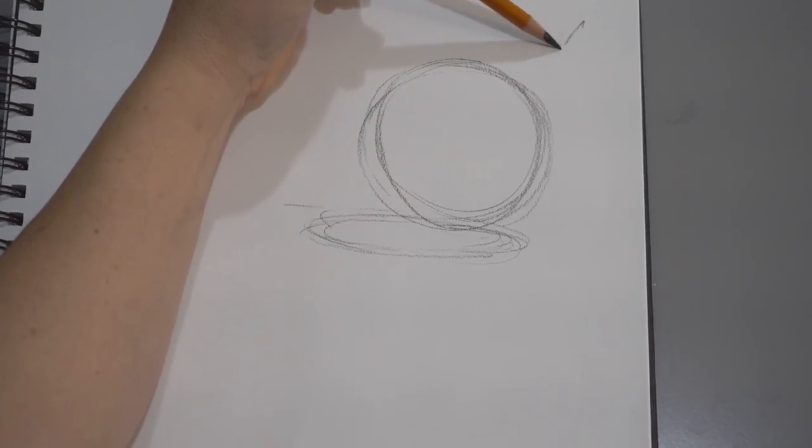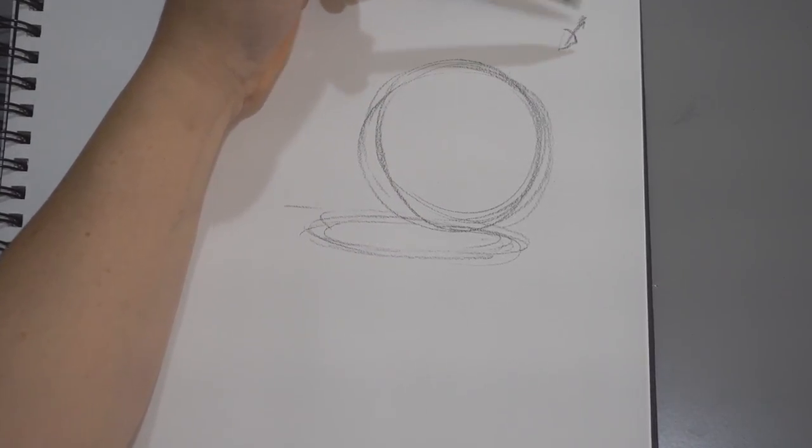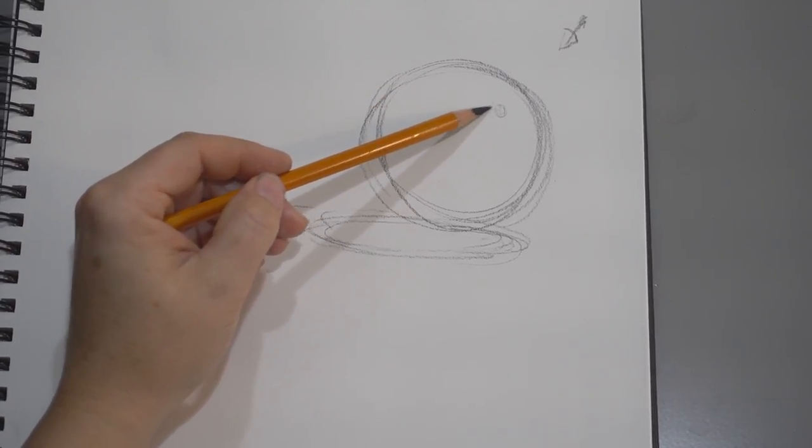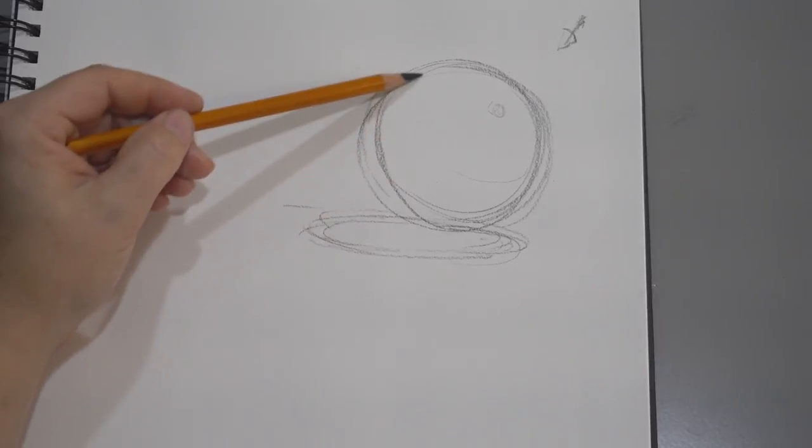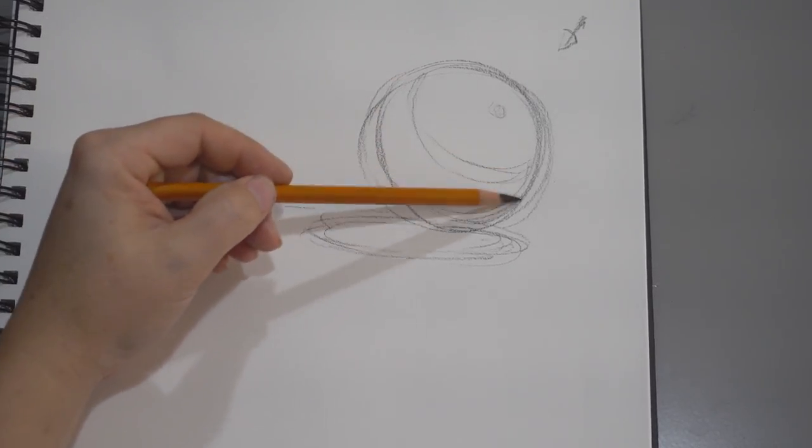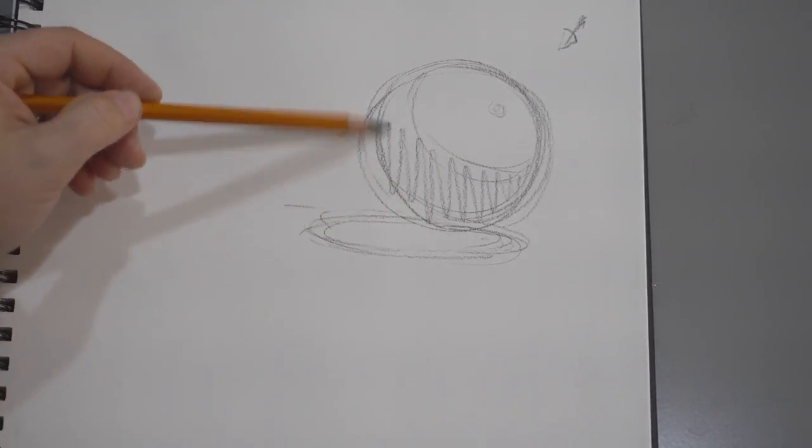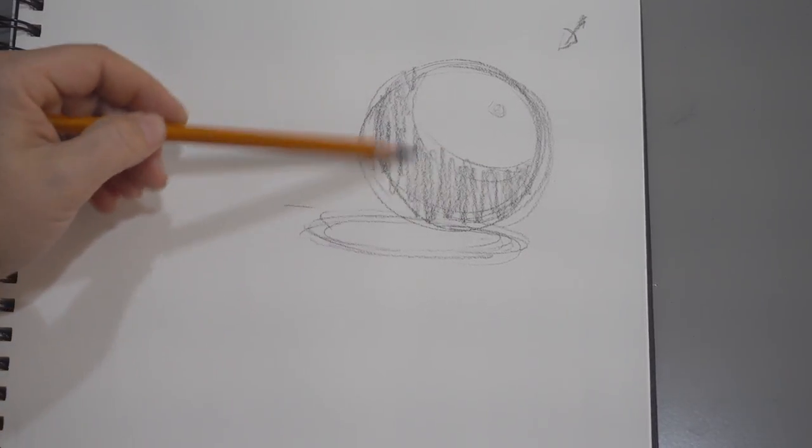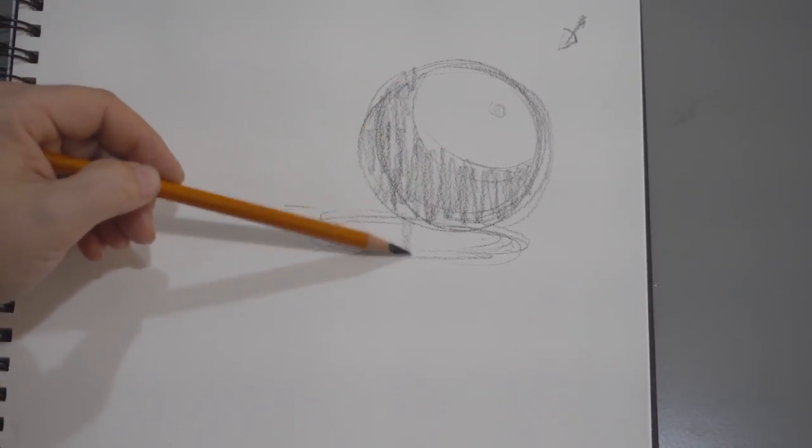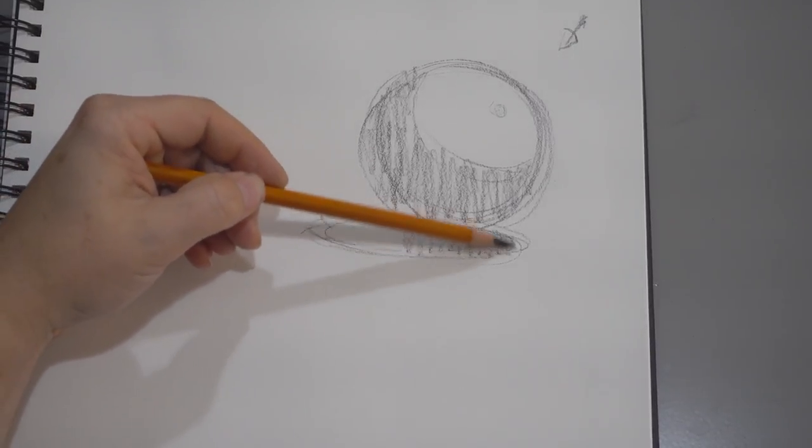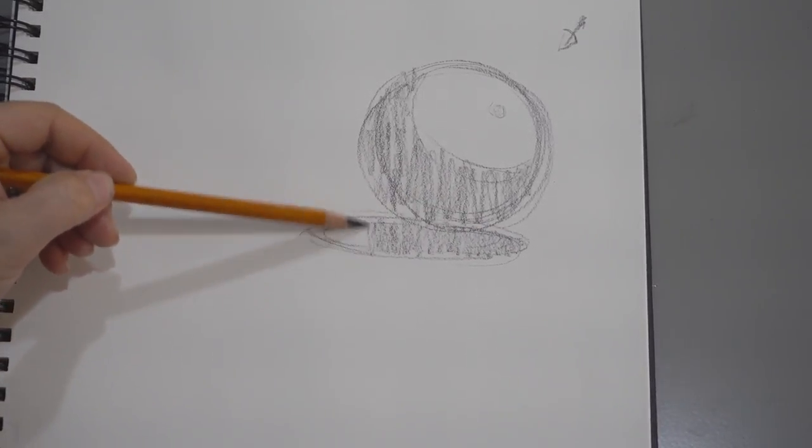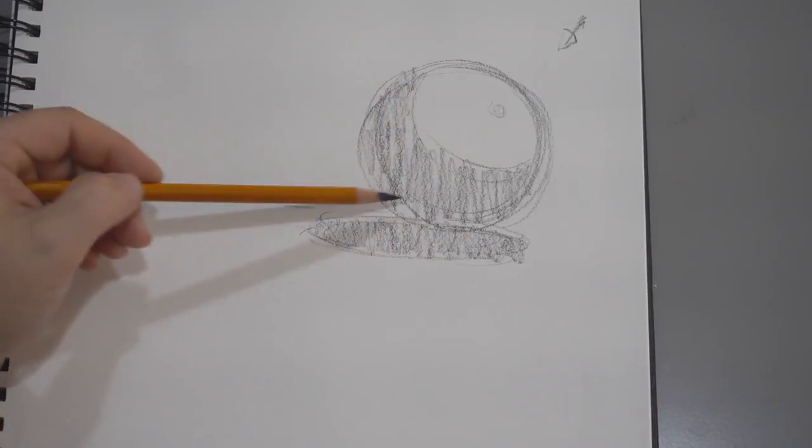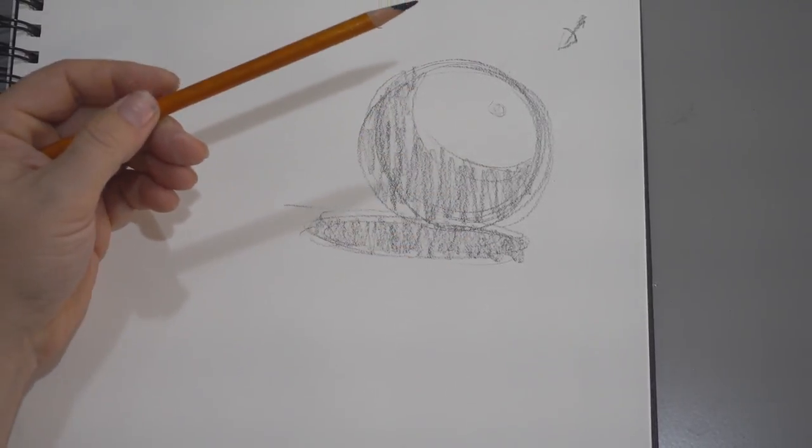Now if we have light coming from this direction, like that, it's going to create a highlight about right in there, and then this area will be in shadow. So let's go ahead and put that in here right now. If this is in shadow and we've got cast shadow here, we start the sphere by knowing that light side, shadow side, cast shadow.